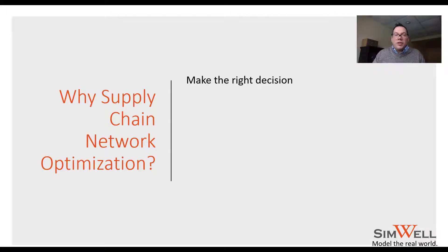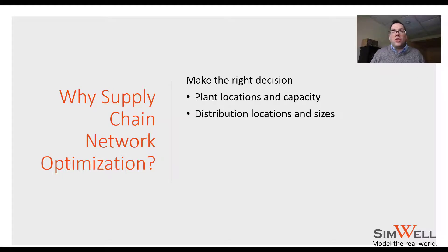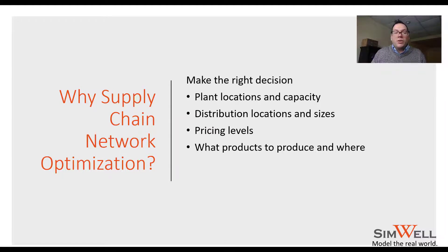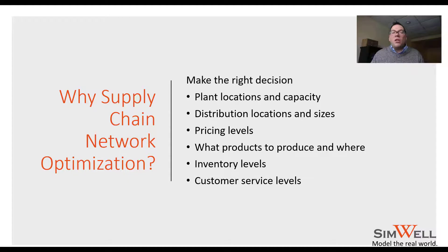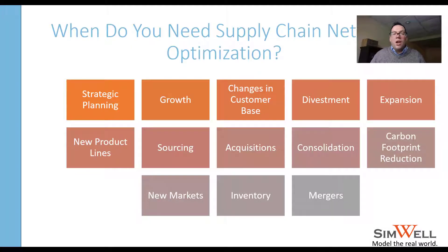Supply chain network optimization helps you make the right decisions — about plant locations and capacity, distribution locations and sizes, pricing levels, what products to produce and where, inventory levels, and customer service levels. All of these decisions have a significant impact on profitability and service levels, so optimizing your supply chain across all of these things helps you make the right decisions for the business.